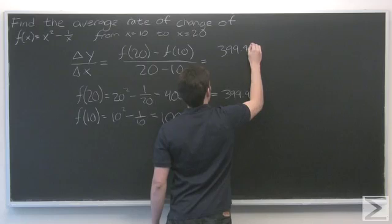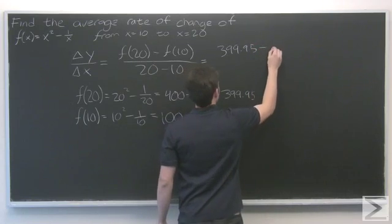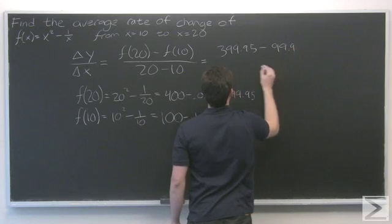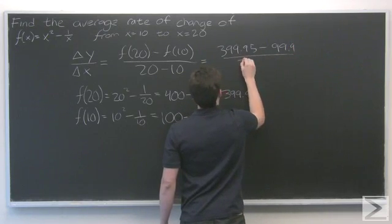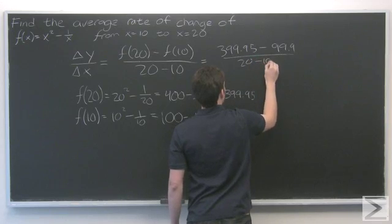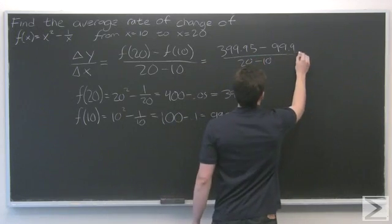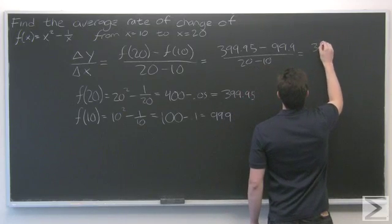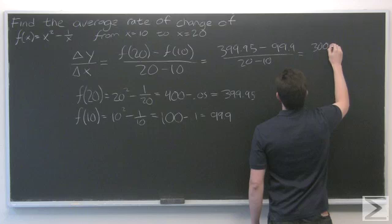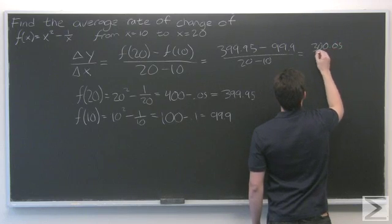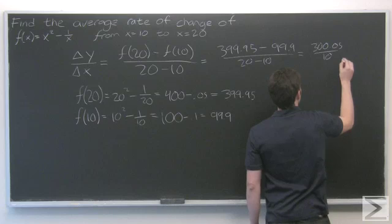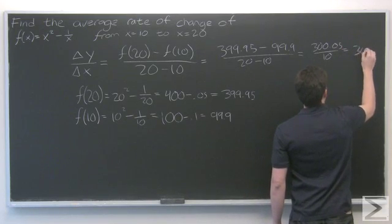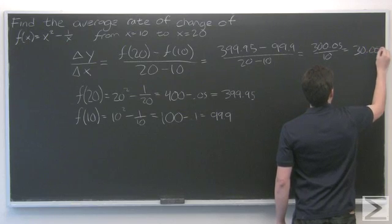399.95 minus 99.9, over 20 minus 10. If we apply subtraction here, we get 300.05 over 10, which is simply 30.005.